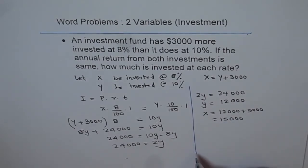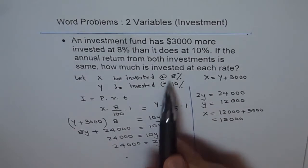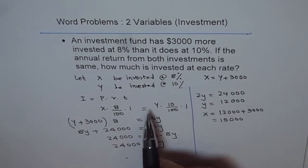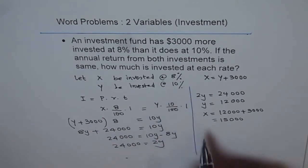So these are the investments. We have investment of $15,000 at 8% and investment of $12,000 at 10%. So those are the answers.